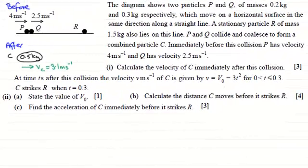Hi. Now, in the first part of this question, we had to calculate the velocity of C immediately after this collision, which we worked out was 3.1 meters per second. So I've updated the diagram with that value.